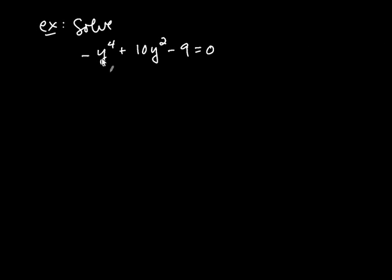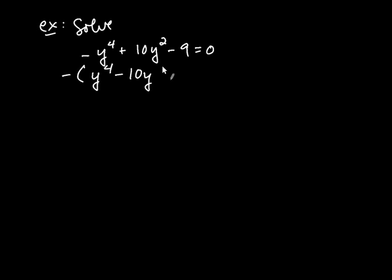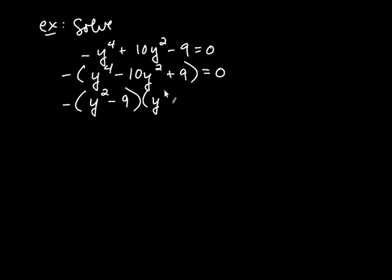Let's solve negative y to the fourth plus 10y squared minus 9 equals zero. The right-hand side is already zero. Now we want to factor the left-hand side. Whenever the lead coefficient is negative, we factor that out. So out comes the negative, giving us negative times y to the fourth minus 10y squared plus 9 equals zero. Then what's in parentheses factors as y squared minus 9 times y squared minus 1, still equal to zero.